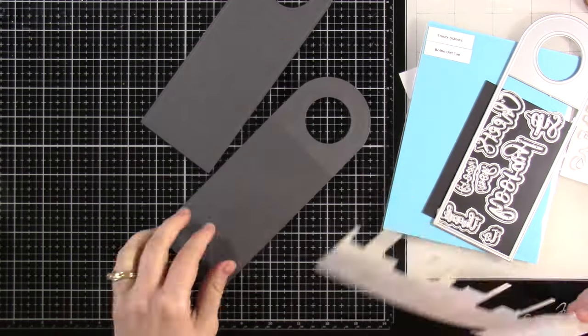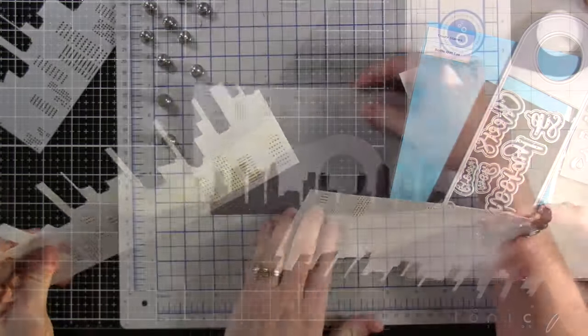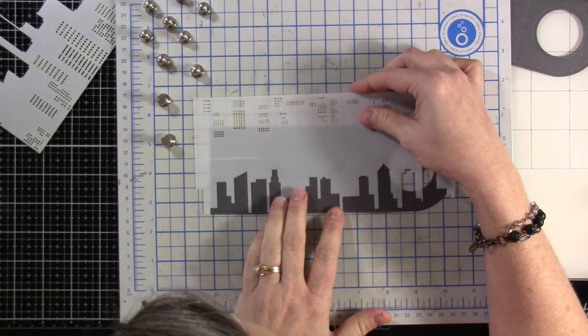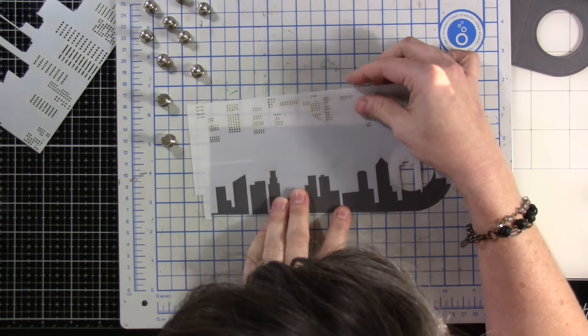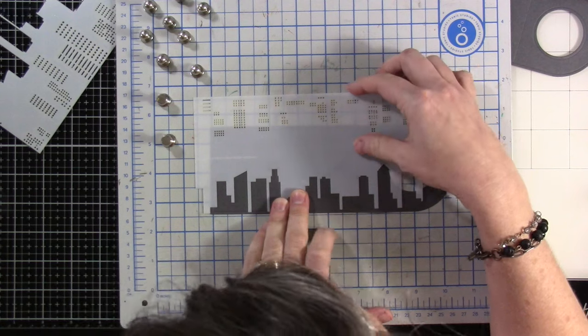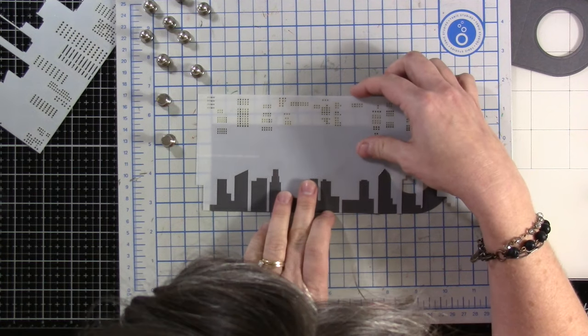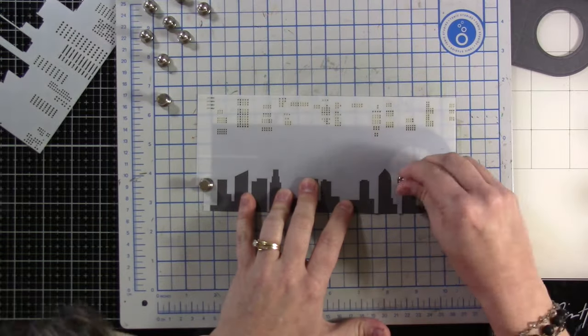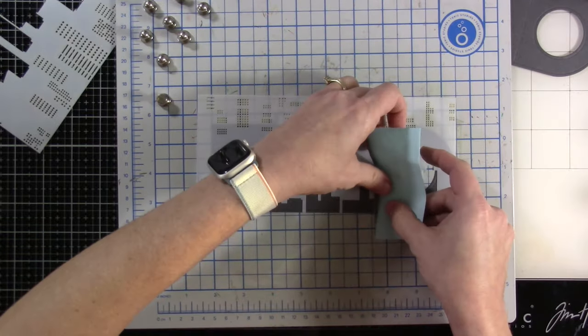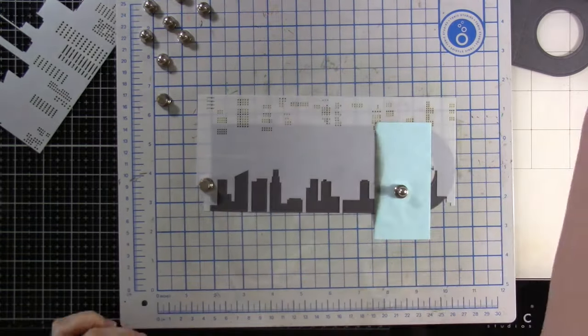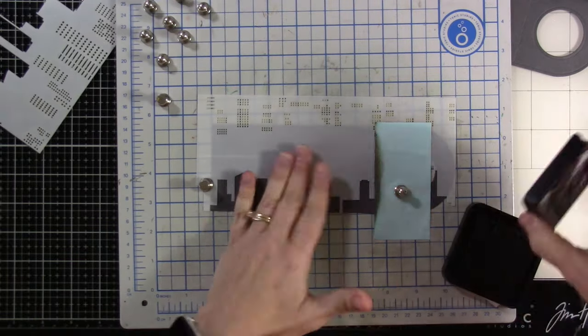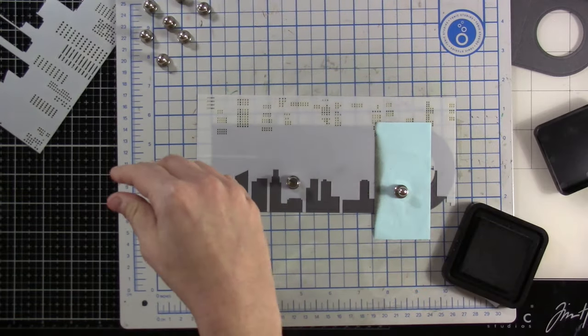So I'm going to bring in my Tonic platform and we've got three stencils, we only need a couple of them. I'm going to tack this down using those magnets just to make sure that I have my cityscape on the background.